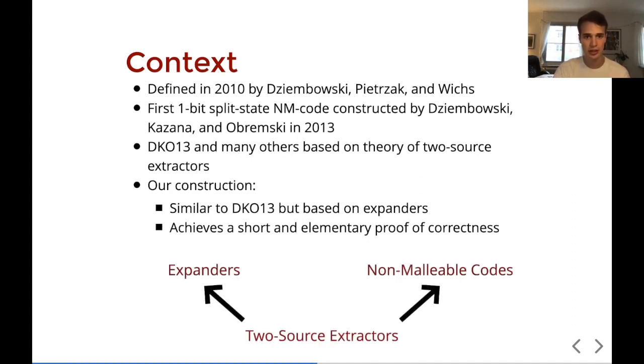Pictorially we know that two-source extractors imply non-malleable codes. Furthermore, roughly speaking, two-source extractors are also expanders, but not necessarily the other way around. In a sense, mathematically speaking, expanders are a weaker object. So the discovery here is that in fact this is enough, at least for one-bit non-malleable codes, and this is what we do. Enough beating around the bush, let's get to the main theorem.